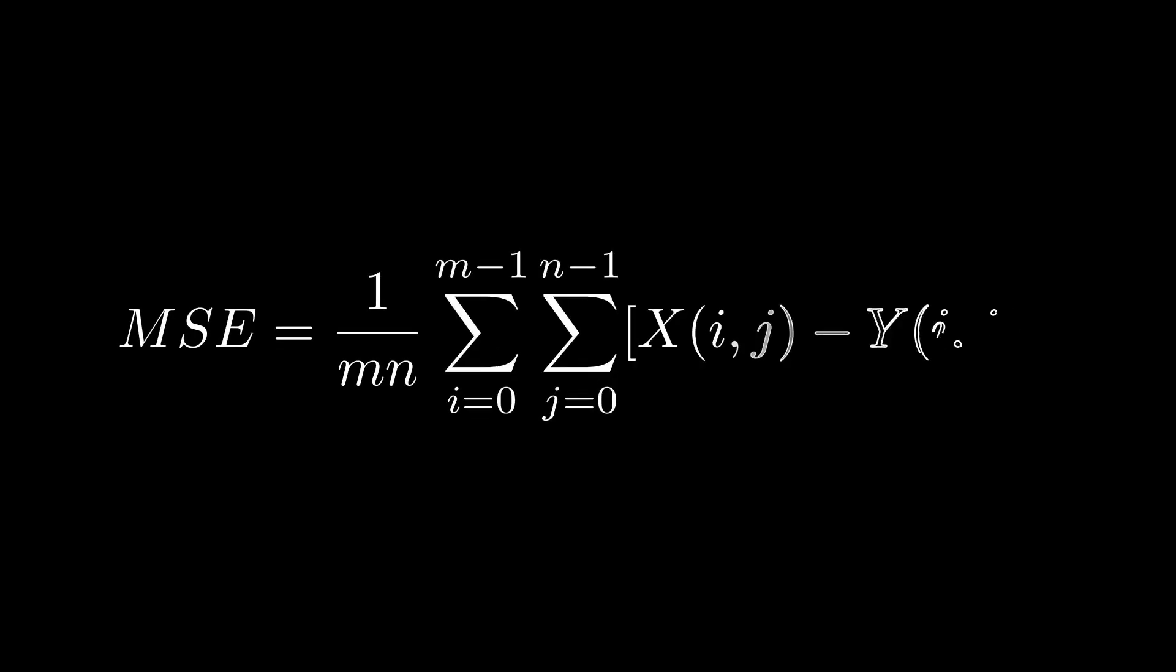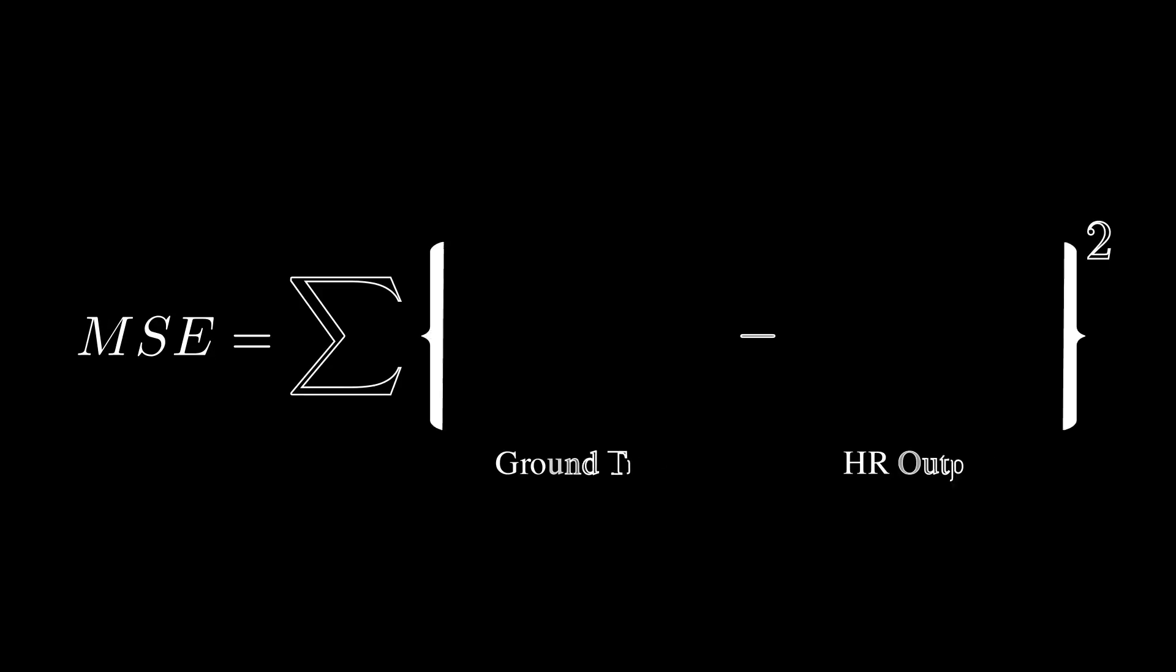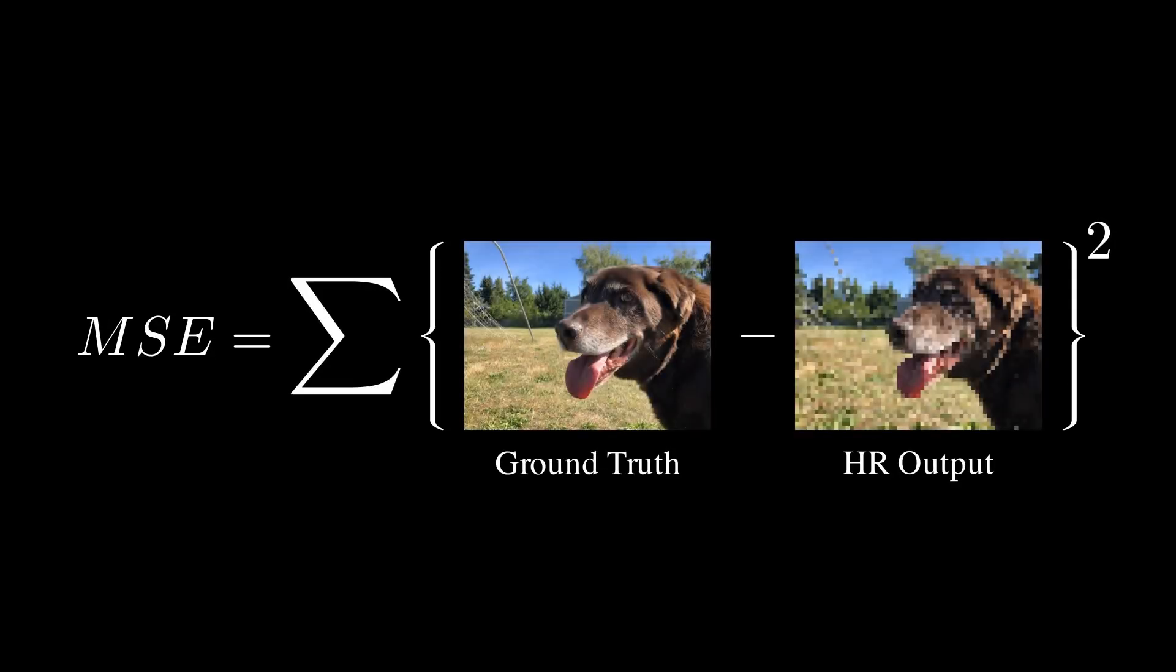Mean squared error, in my opinion, is the most intuitive metric, and is also very easy to calculate, since it is just the mean squared pixel-wise difference between the reconstructed and ground-truth image.